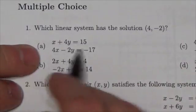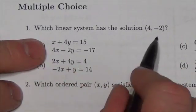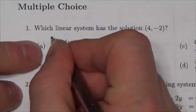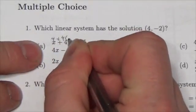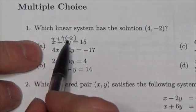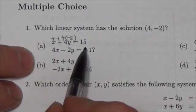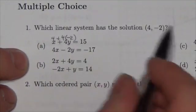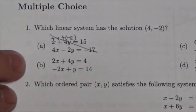So let's just take a quick look here. If we plug in that point here, 4 and negative 2, so this would be 4 plus 4 times negative 2, well 4 and negative 8, well that's not 15, so this point doesn't even satisfy the first equation in this case, so that's not it.